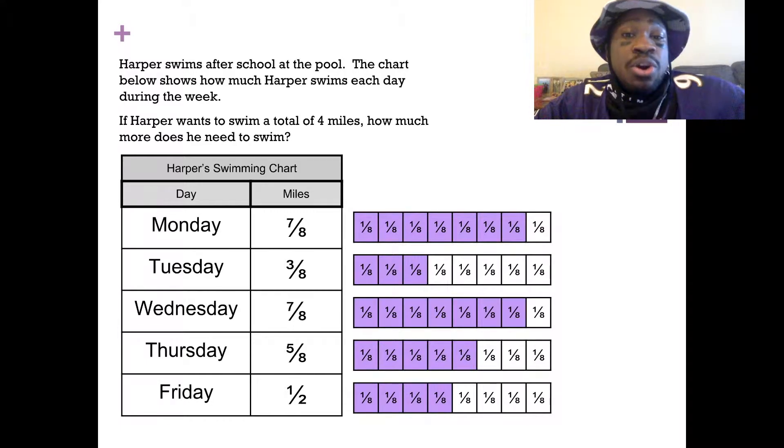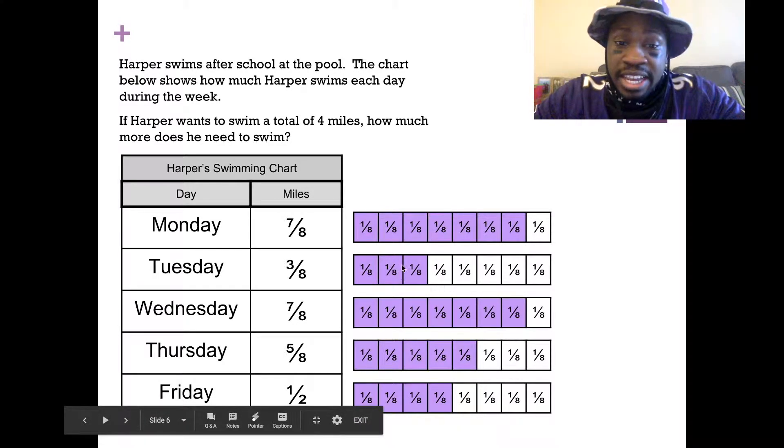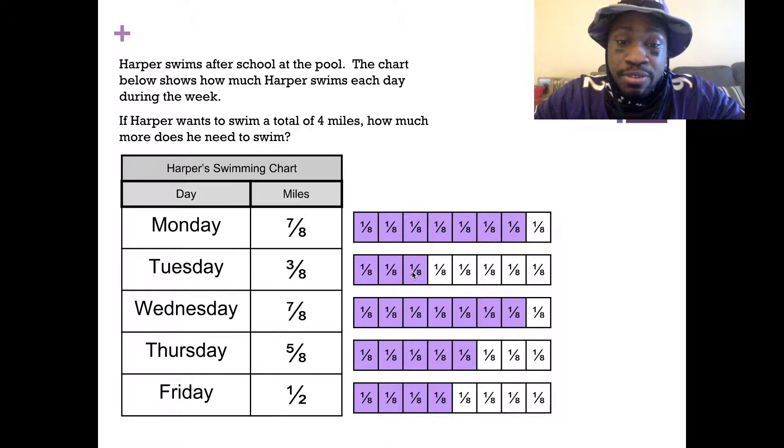So now that I see all of this, I can go ahead and start combining these amounts together to see how much Harper swam. We have seven-eighths, eight-eighths, nine-eighths, ten-eighths. So that's ten so far. Plus these seven, that's probably seventeen-eighths, but let's go ahead and count. So ten-eighths, eleven-eighths, twelve-eighths, thirteen-eighths, fourteen-eighths, fifteen-eighths, sixteen-eighths, seventeen-eighths. I have seventeen of these eighths from Monday to Wednesday.